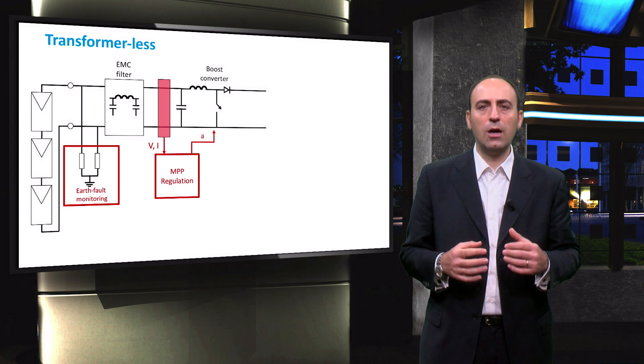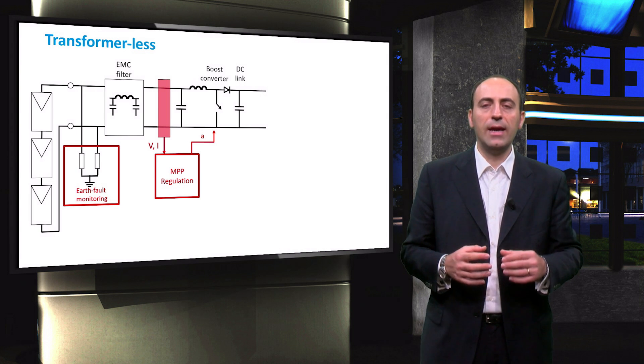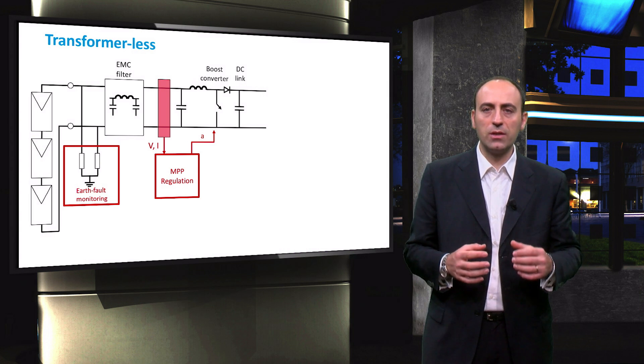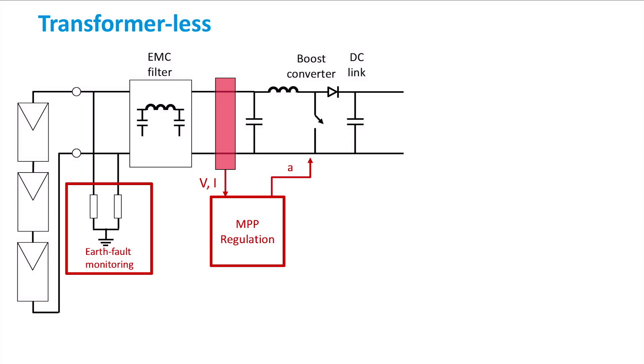The signal to regulate the duty cycle of the converter is determined by the maximum power point tracking algorithm. In order to smoothen the output signal of the boost converter, a DC link consisting of a shunt capacitance is used. The following part of the inverter is represented by the pulse width modulation bridge, which is the essential part of the inverter, as we have seen in the previous lectures.